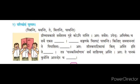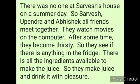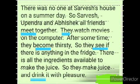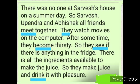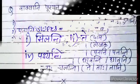Now question number two: Parishetam purayat — complete the paragraph. In brackets they show some words: bivanti (to drink), bhavanti (to be), te (they), milanti (to meet), pashyanti (to see). Here I show the meaning of this paragraph with answers. Note down this question and answers in your notebook and solve this question.